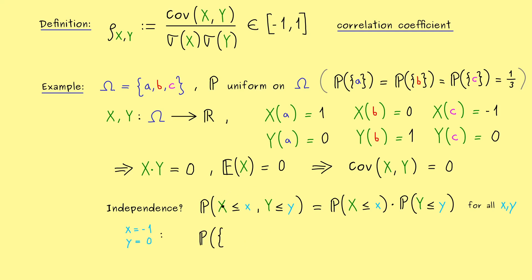Then, on the left hand side, let's put in all the elements of omega that fulfill both inequalities. And there we see, this is only fulfilled for c. Only there, X is sent to minus 1. However, now on the right hand side, we find something different. We also find the probability of c in the first factor, but in the second factor, we find more.